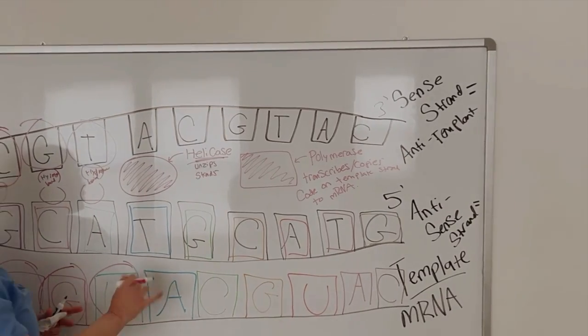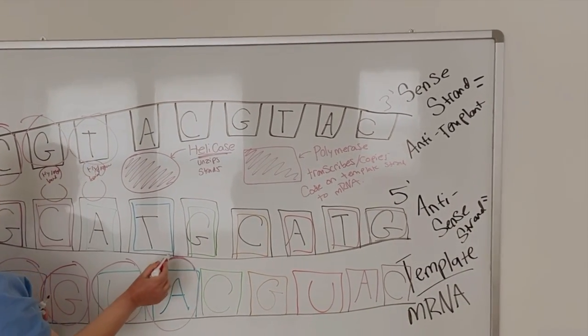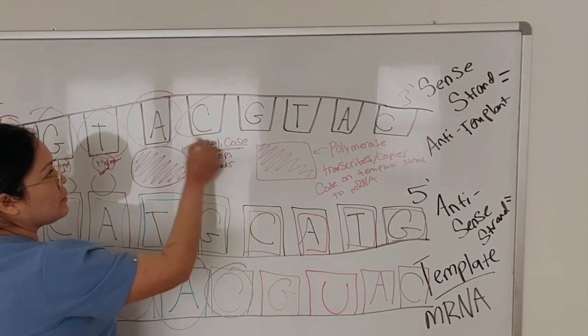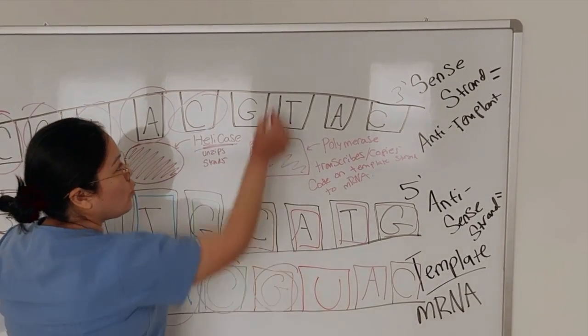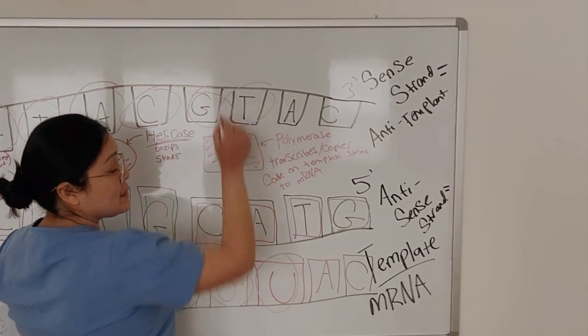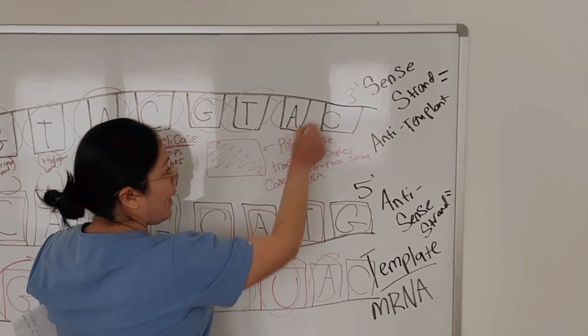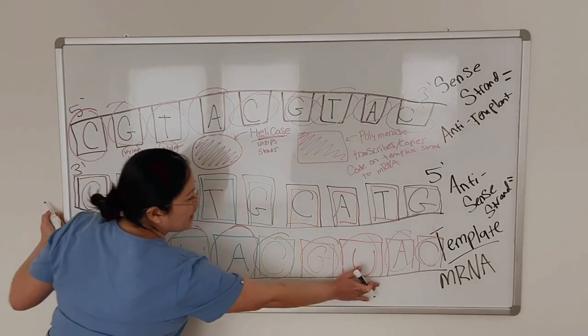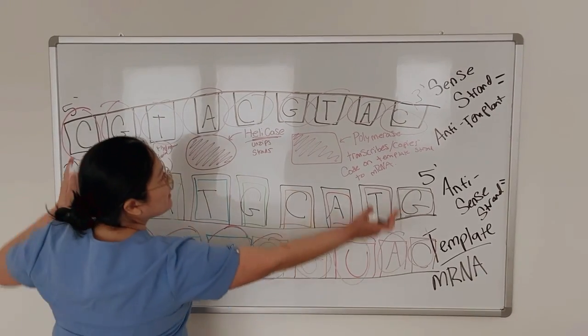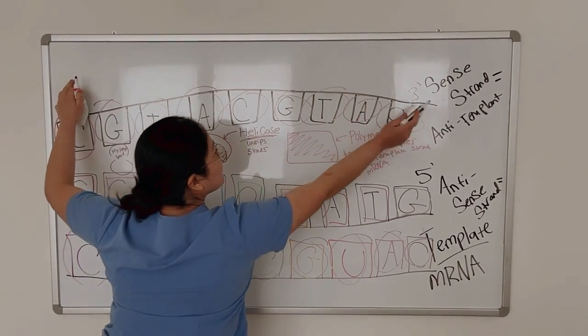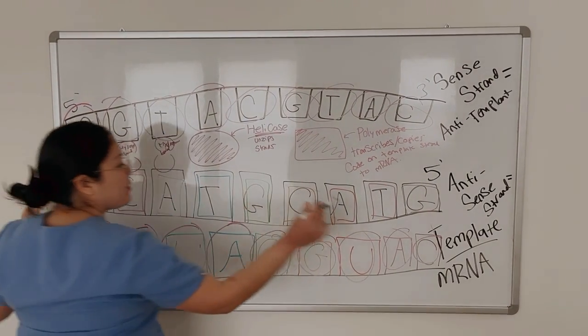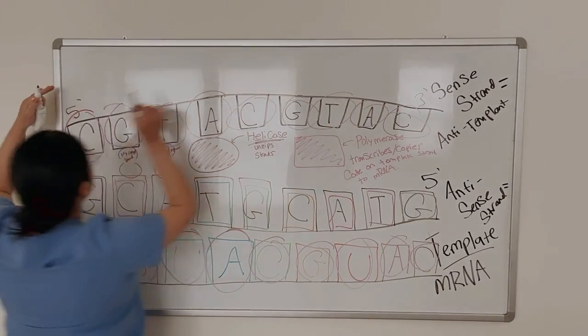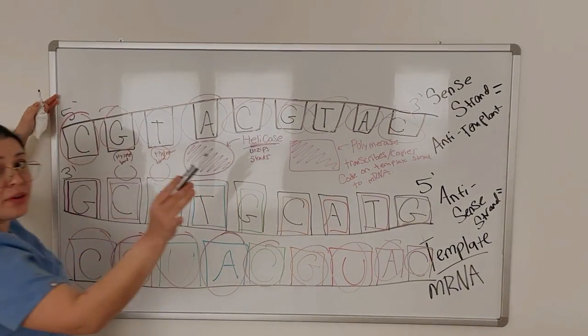So we've got pretty much the same pattern going on here, the same sequence. We've got adenine and adenine. We've got cytosine and cytosine, guanine and guanine. Again, uracil replaces thymine, adenine and adenine, and cytosine and cytosine. So you can see that the sequence here is the exact same sequence as the sense strand. We can also say that the sequence of the mRNA is the same as five prime to three prime.